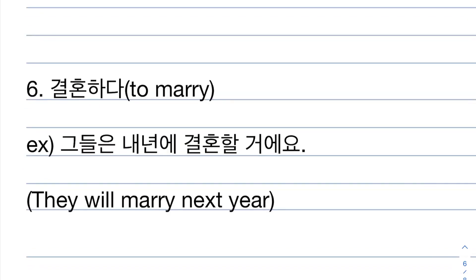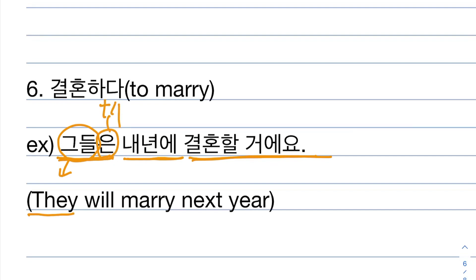Number six. 결혼하다 means to marry. Example: 그들은 내년에 결혼할 거예요. 그들 means 'they', 은 is topic particle, 내년에 is 'next year', 결혼할 거예요 means will marry. So this means 'they will marry next year.'